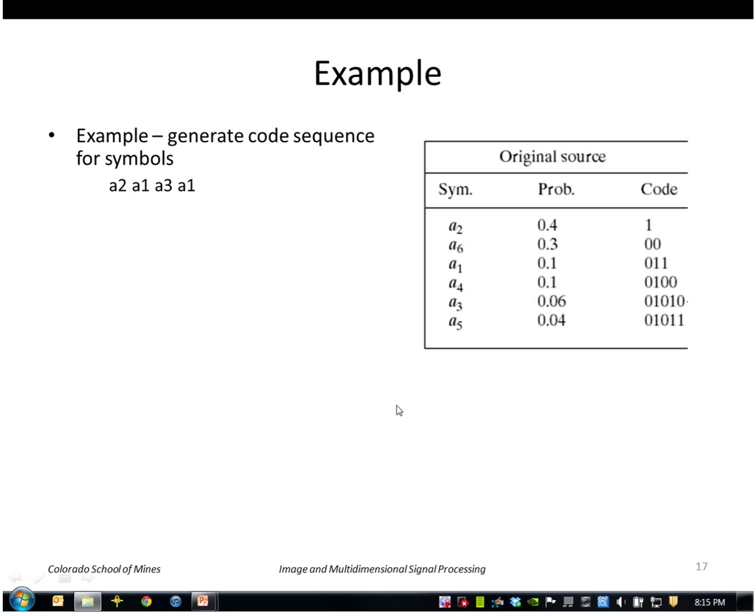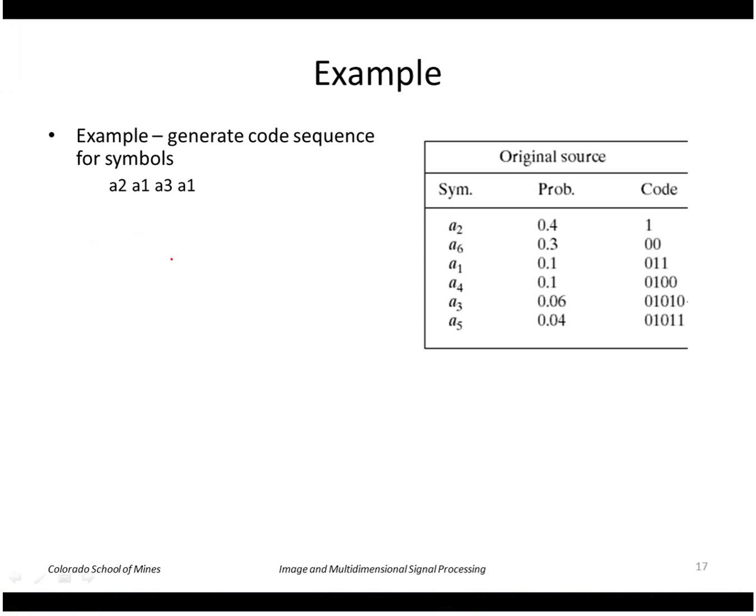To see how the Huffman code could be used, let's generate a code sequence for these symbols using the variable length code we derived. Symbol a2 is just a 1, symbol a1 is 0 1 1, a3 is 0 1 0 1 0, and a1 again is 0 1 1.